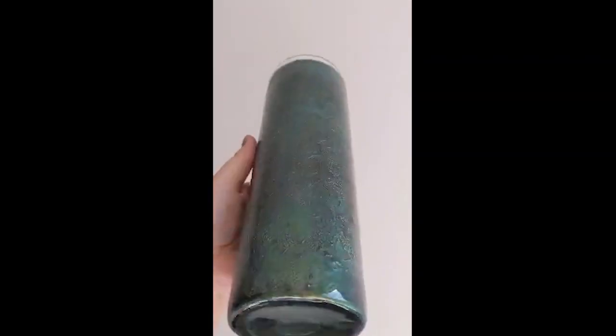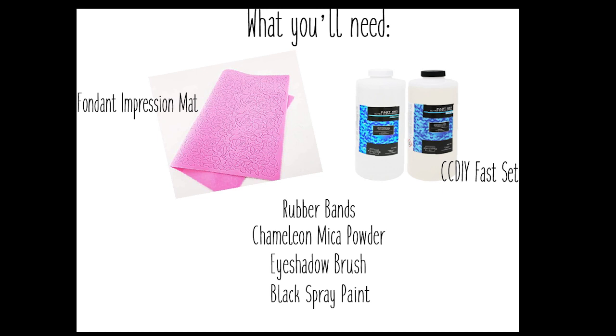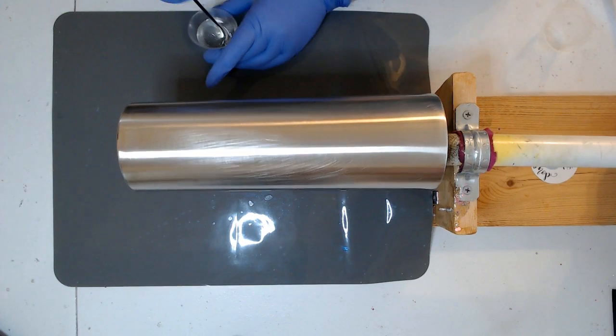A few things you're going to need are a fondant impression mat, I used counterculture facet epoxy, rubber bands, chameleon mica powders, eyeshadow brush, and some black spray paint. The first thing I did was I sanded my tumbler really well and then washed it with Dawn dish soap.